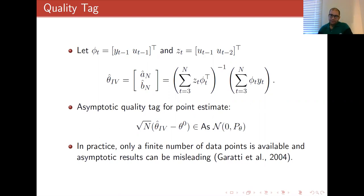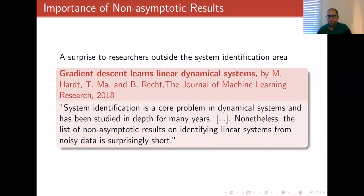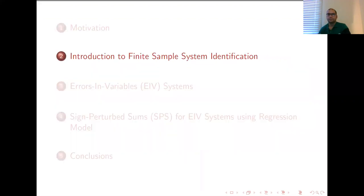In response to this, a class of methods has been proposed. To show the importance of finite sample system identification and the sparsity of this research field, I want to quote from a machine learning paper outside the system identification area: 'System identification is a core problem in dynamical systems, which has been studied in depth for many years, and nevertheless the list of non-asymptotic results on identifying linear systems from finite data is surprisingly short.' Exactly in response to this, finite sample system identification methods have been proposed.